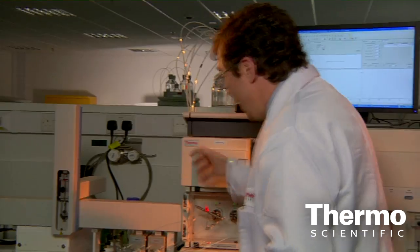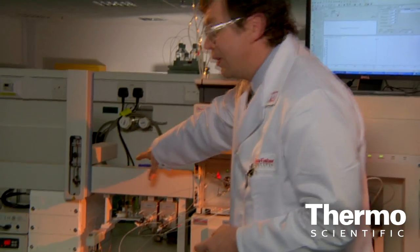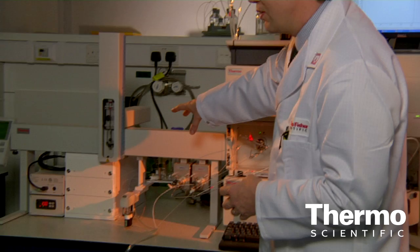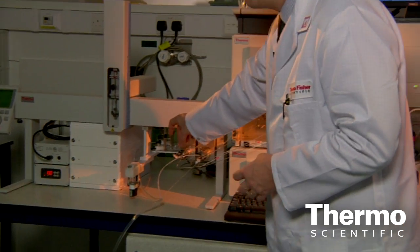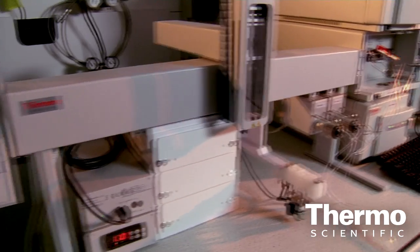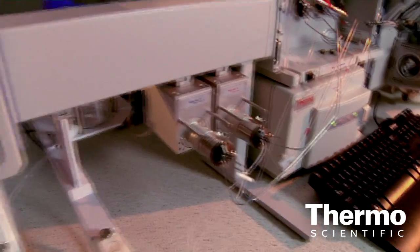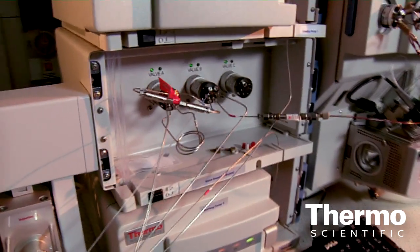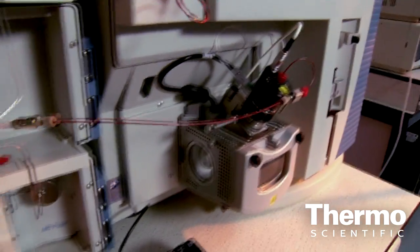So what actually happens is that you take a standard autosampler, this is a modified CTC, and you inject the neat plasma or neat biological fluid into this section here and then it goes through a selection of valves onto the turbo flow column.